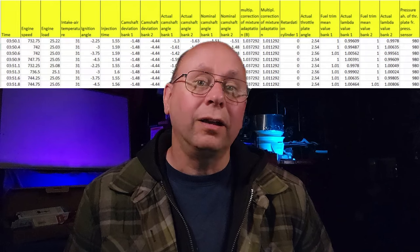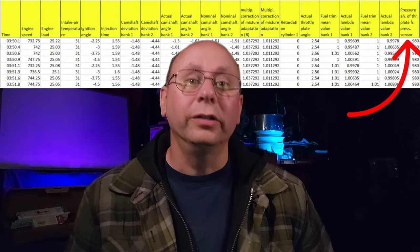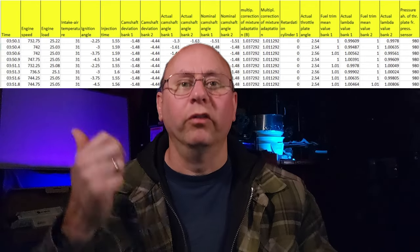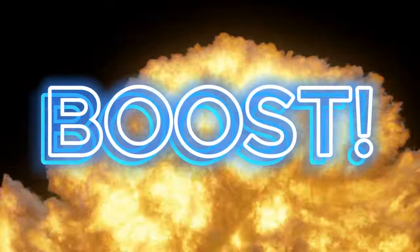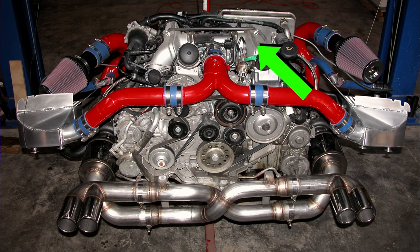The last column in our example is another odd-looking value: Pressure Ahead of Throttle — or simply put, BOOST! On the 996 and 997.1 Turbo, there's only a single MAP sensor, located in front of the throttle plate and not actually in the manifold.